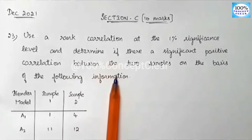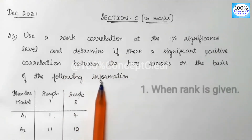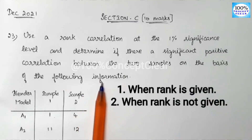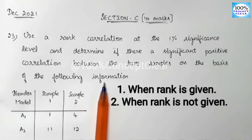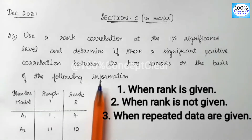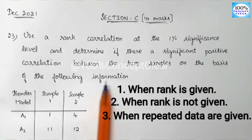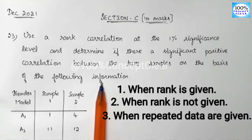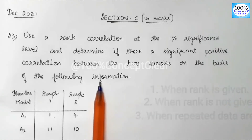In rank correlation, we have three types. The first type is the rank sum. The second type is also rank sum. The third type involves repeated ranks. These are the three types of rank correlation.